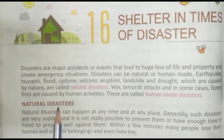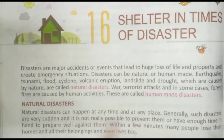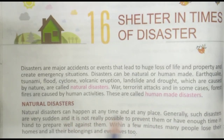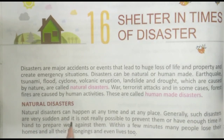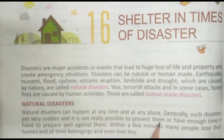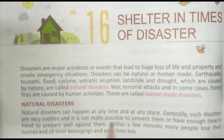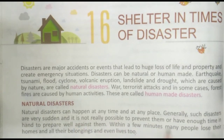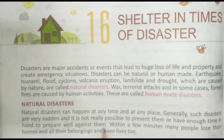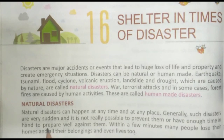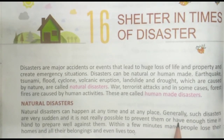Natural disasters — prakritik apadaein. Natural disasters can happen at any time and at any place. Natural disasters kisi bhi time par aur kisi bhi place par aa sakte hain. Generally, such disasters are very sudden, aur inhe rokna sambhav nahi hota, ya unke khilaaf achi tarah se prepare hone ke liye enough time nahi hota.